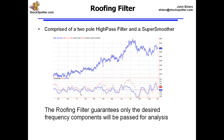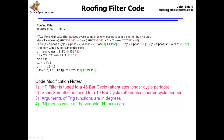Here's the code for the roofing filter. First is the two-pole high-pass filter. I calculate one variable, alpha1, set to reject periods longer than 48 bars. Note it uses angular measurements — 360 degrees — which should be translated to 2π in other languages. Here is the expression for the high-pass filter. I take the output of that filter and put it through the super smoother, which constitutes the roofing filter. Square bracket notation indicates values one or two bars ago — take that into account when translating to other languages.